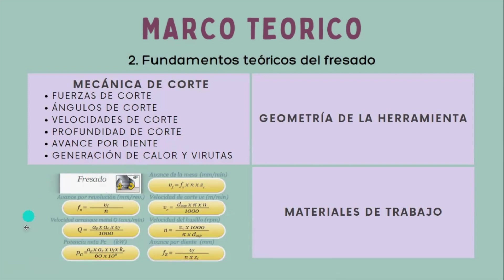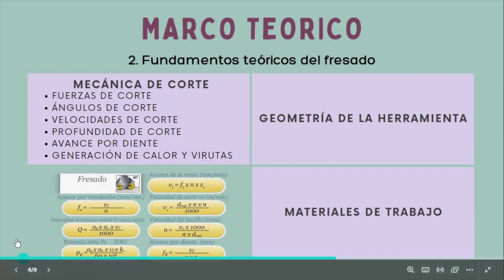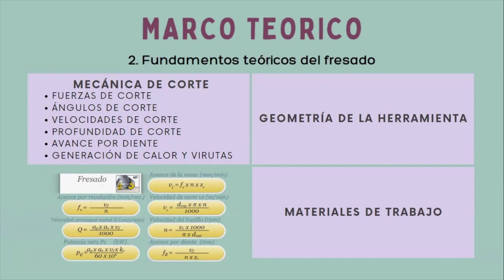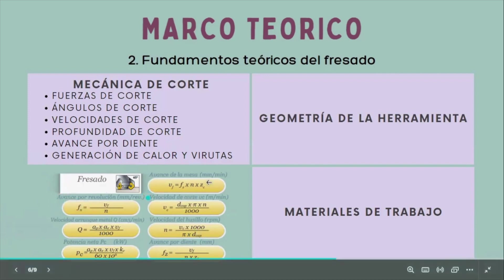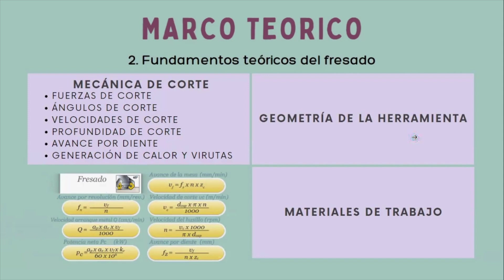En la imagen podemos apreciar las fórmulas que son fundamentales para optimizar los parámetros de fresado y mejorar tanto la eficiencia como la calidad del proceso mecanizado. Como segundo subtema está la geometría de la herramienta. Esto es fundamental en el proceso mecanizado, ya que determina la eficiencia, precisión y calidad del trabajo realizado.